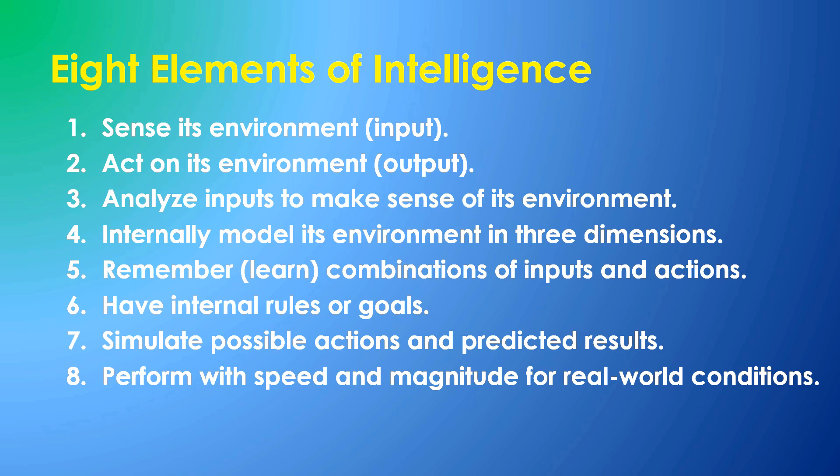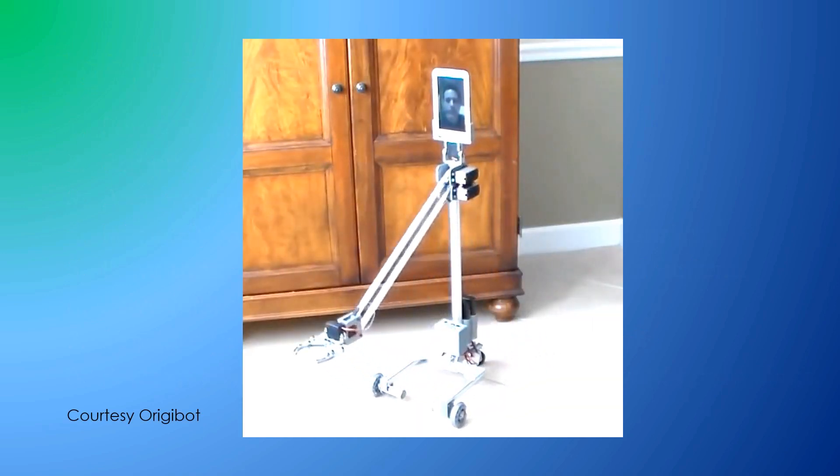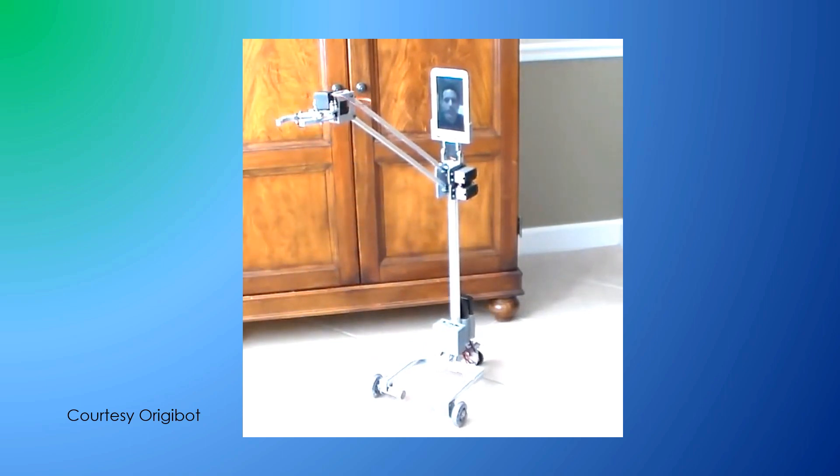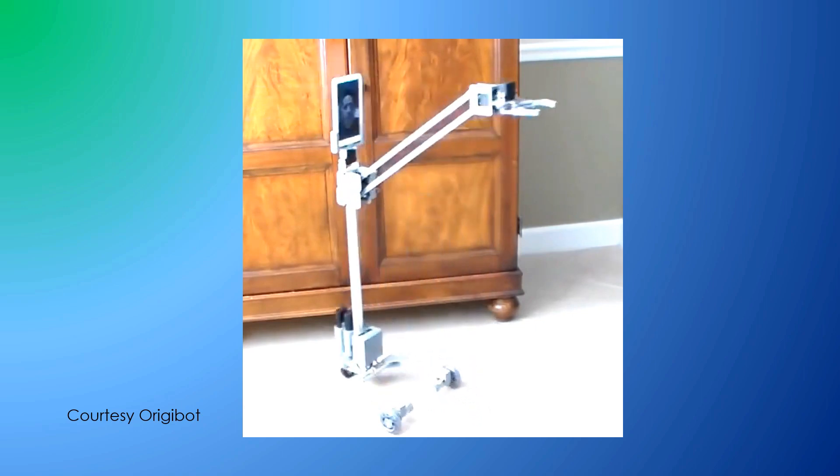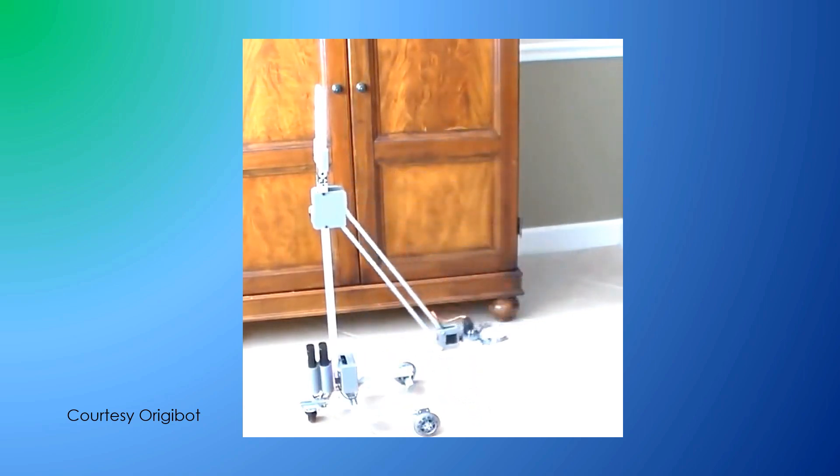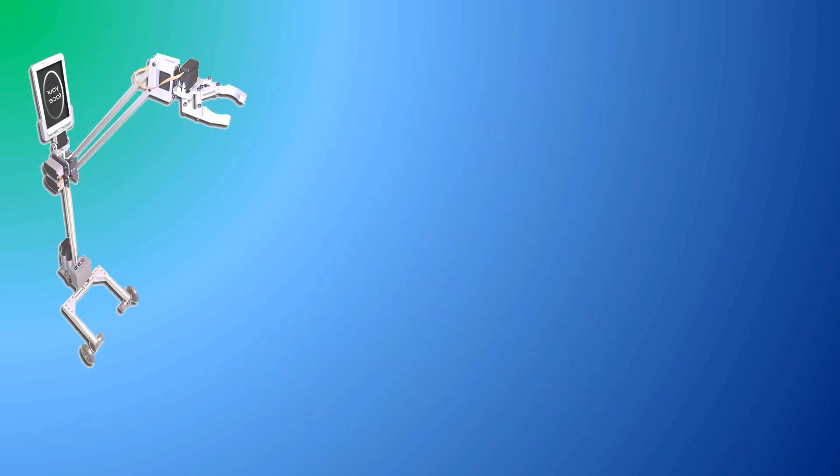Let's consider these eight elements in terms of a simple mobile robot. For example, a telepresence robot which relies on human intelligence via a Wi-Fi connection to perform a useful function. This robot can sense its environment with sight and sound, and can impact its environment with motion, its arm and gripper, and with sound and images from its controller.